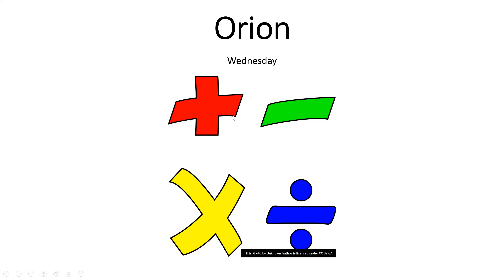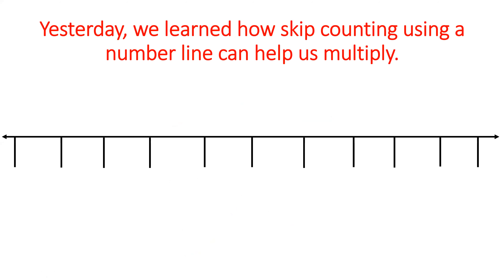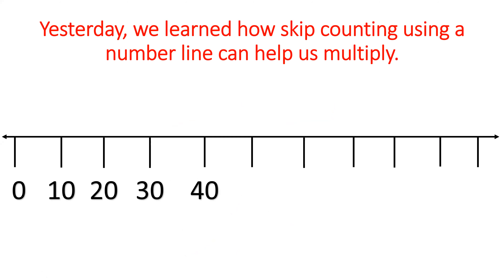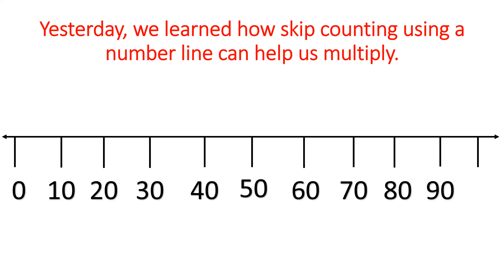Hey Orion, happy Wednesday. Yesterday we learned how to skip count using a number line — how skip counting using a number line can help us multiply. First, let's begin skip counting by 10, nice and loud: zero, 10, 20, 30, 40, 50, 60, 70, 80, 90, 100. Great job.